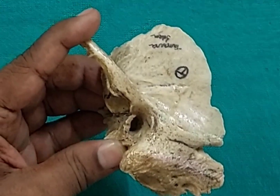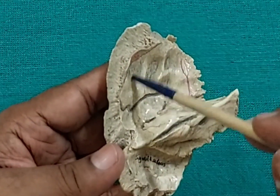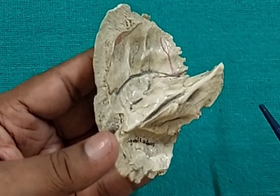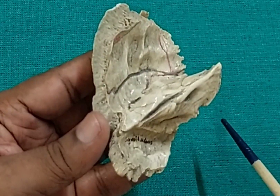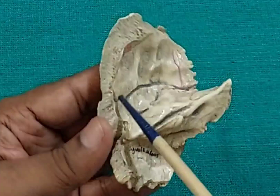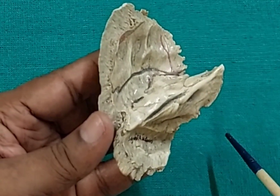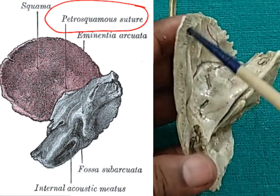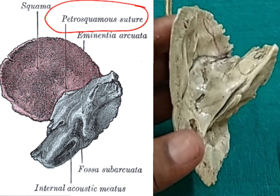Now come to the internal surface. There are many impressions and depressions on the internal surface for the lodgement of the gyri of the temporal lobe of the cerebral hemisphere. There are also some grooves for the frontal and parietal branches of the middle meningeal artery. And here is a suture between the squamous part and the petrous part called the petrosquamosal suture.